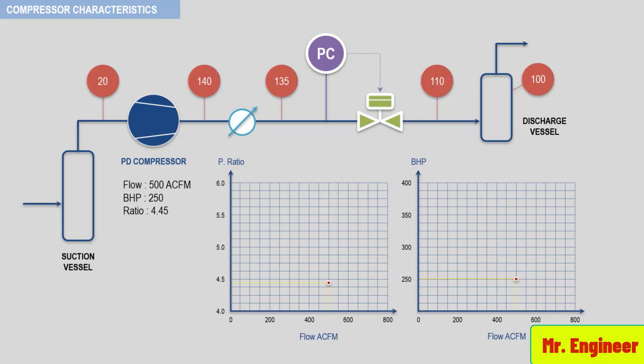Now, let's assume that the control valve in the discharge process system is slightly closed. With this action, the pressure upstream of the control valve increases to 175 psi and the discharge pressure of the compressor increases to 180 psi. The horsepower also increases to 300 bhp. In your opinion, what has happened to the ACFM or the actual flow in this case? Let's plot the new pressure ratio and brake horsepower to figure it out.